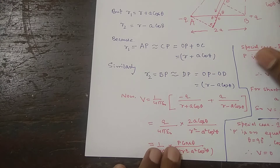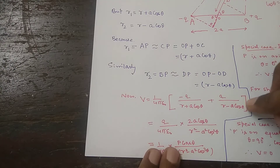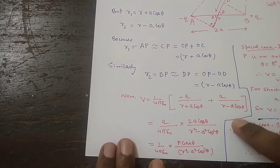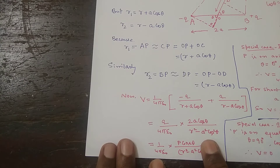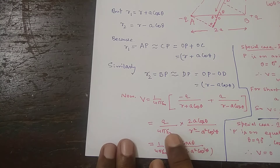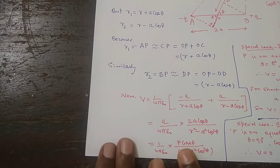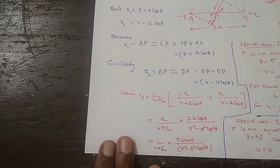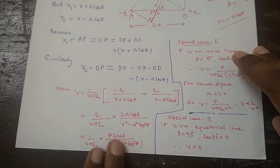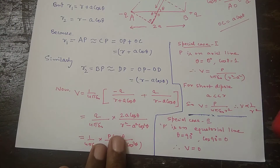Substituting all these values into the expression and simplifying, we get the result. Here, 2AQ — where 2A is the separation and Q is the charge — on multiplication gives the dipole moment P. So this final expression involves the dipole moment P. There are two special cases to consider.